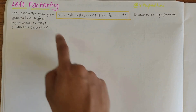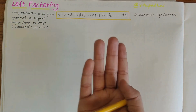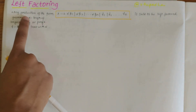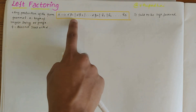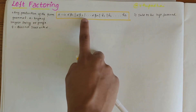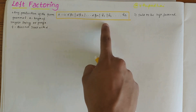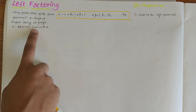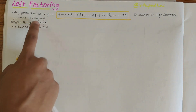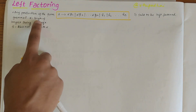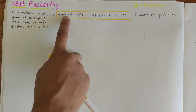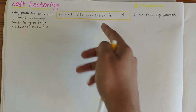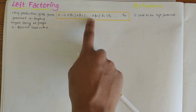In this video we'll be looking into the left factoring topic and solve some basic questions. Any production of the form A derives alpha beta1, alpha beta2, so on till alpha beta_n and gamma1, gamma2 till gamma_n is said to be a left factored grammar, where alpha refers to the length of the longest common prefix and gamma refers to any production which does not have alpha in it.